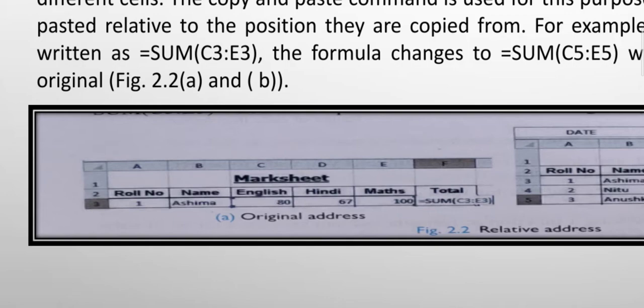D4 67, E 100. Total number sum. This is the formula: equals SUM C3 to E3.